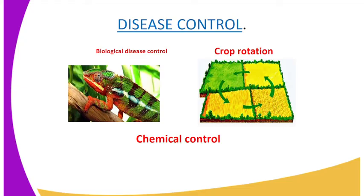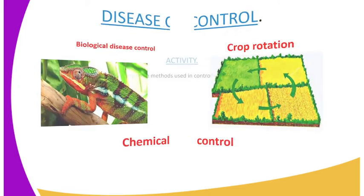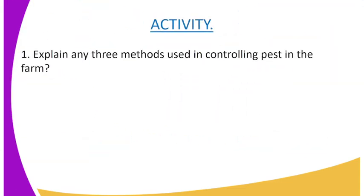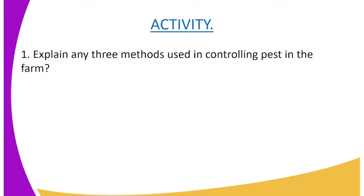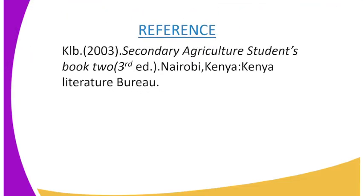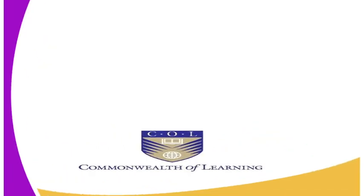We have come to the end of today's lesson. Your assignment is to explain any three methods used in controlling pests in the farm. For reference, you can refer to the Kelby's Secondary Agriculture Student Book Two, published by the Kenya Literature Bureau.